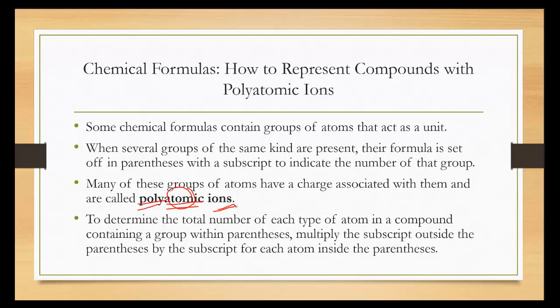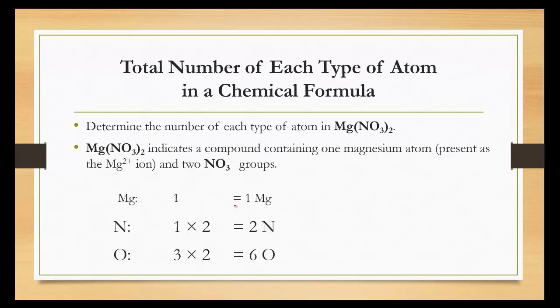To determine the total number of each type of atom in a compound containing a group with parentheses, multiply the subscript on the outside of the parentheses by the subscript for each atom inside the parentheses. For instance, magnesium nitrate. Magnesium is outside of the parentheses, so it's all by itself with an invisible number 1, meaning there's only one magnesium here.